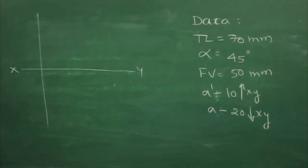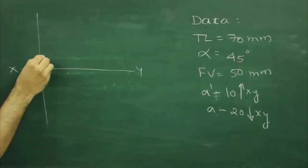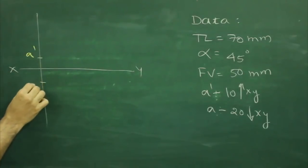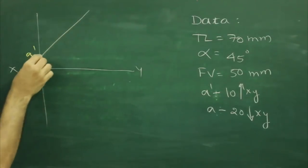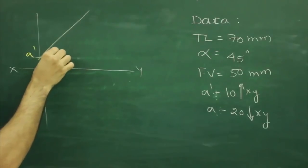Then we will mark point A dash and A. Then we have angle 45 degrees, so first we will draw angle 45 degrees.